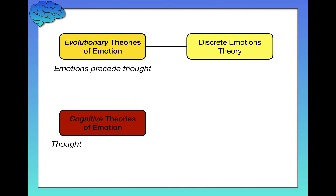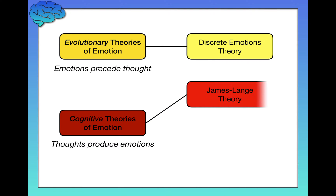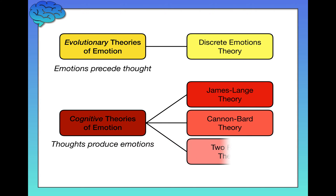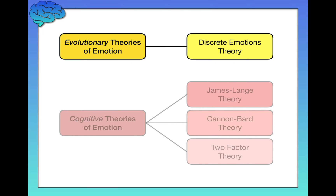Next we have cognitive theories of emotion, which flips the script entirely. Cognitive theories of emotion assume that thoughts produce emotions, so cognition is extremely important, and without cognition you won't really get emotion. There are three different cognitive theories of emotion: first, the James-Lange theory; next, the Cannon-Bard theory; and finally, the two-factor theory. I'll go through each of these in turn, starting with the discrete emotions theory.